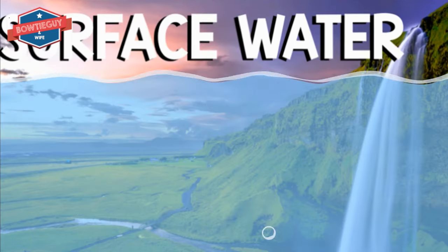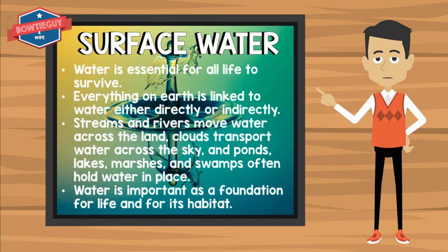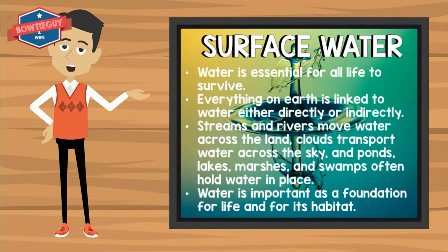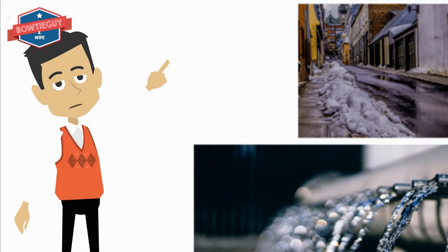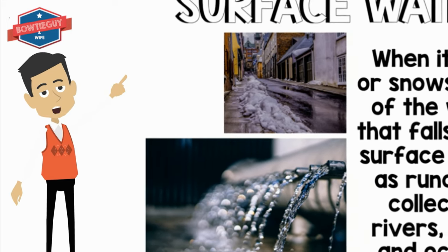Now let's discuss surface water. Water is essential for all life to survive. Everything on earth is linked to water either directly or indirectly. Streams and rivers move water across the land. Clouds transport water across the sky. Ponds, lakes, marshes, and swamps often hold water in place. Water is important as a foundation for life and for its habitat. When it rains or snows, some of the water that falls to the surface moves as runoff — it collects in rivers, lakes, and oceans.